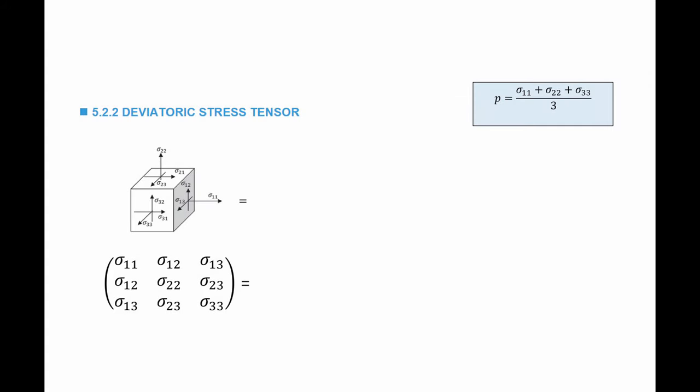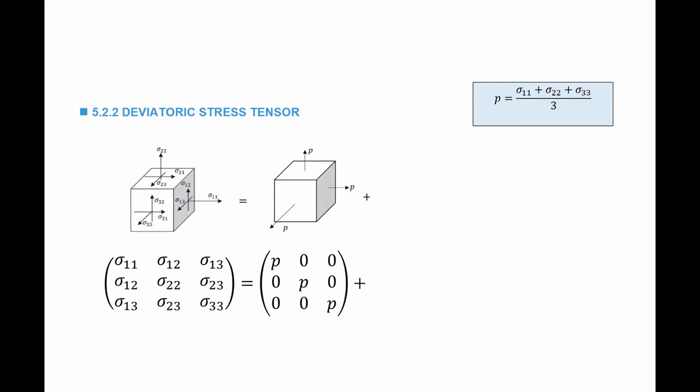The second stress measure is called the deviatoric stress tensor. Looking at a stress state represented by the stress matrix, I can divide it into two additive components. The first component is the hydrostatic component — the same cube under a hydrostatic state of stress P, applied in all directions, where P equals the average of the stresses: sigma_11 plus sigma_22 plus sigma_33 over 3.